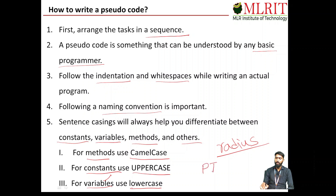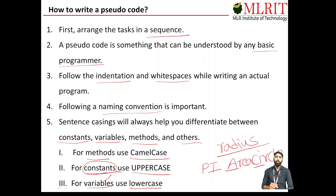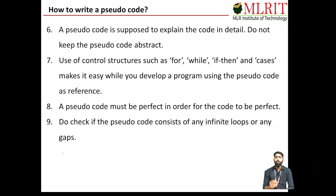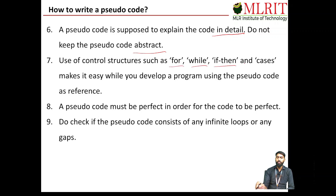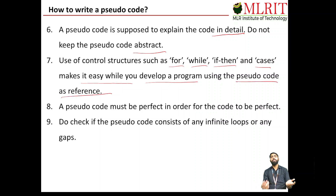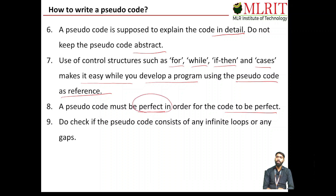For example, if I define a variable 'radius' in small letters, it is a variable name. If defined in capital letters like 'PI', it is a constant. If I define a function like 'AreaCircle' with both A and C capitalized, that means it is a function. A pseudo code is supposed to explain the code in detail — don't keep the pseudo code abstract; there should be no ambiguity. Use control structures such as for, while, if-then, and cases — this makes it easy to develop a program using the pseudo code as a reference.